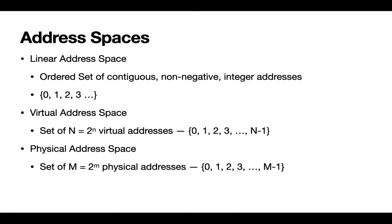We're going to have two address spaces — virtual addresses and physical addresses — and we want to distinguish them. A virtual address space, denoted by the letter N, is going to be a power of two virtual addresses ranging from 0 to N minus 1. In the physical address space, denoted by M, it's similarly a power of two physical addresses from 0 to M minus 1. Keep an eye out for those letters — we'll use them consistently through the illustrations in the next few slides.